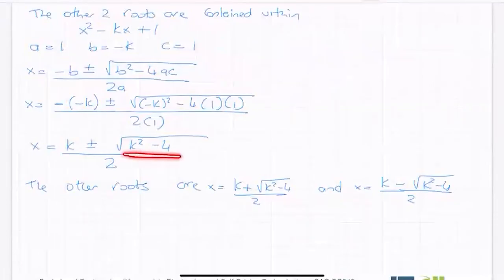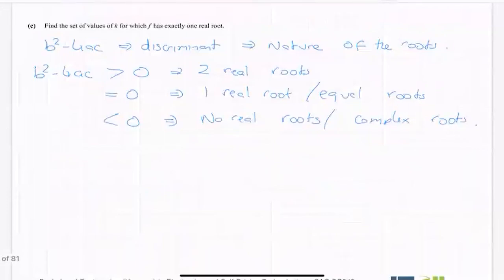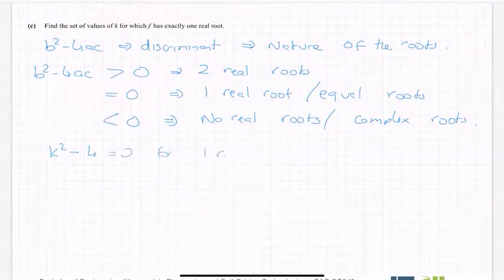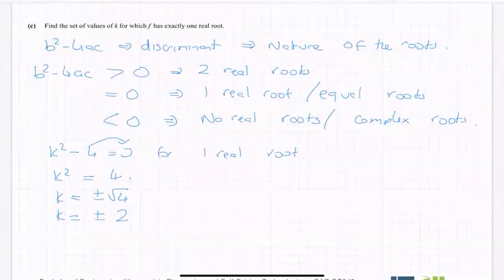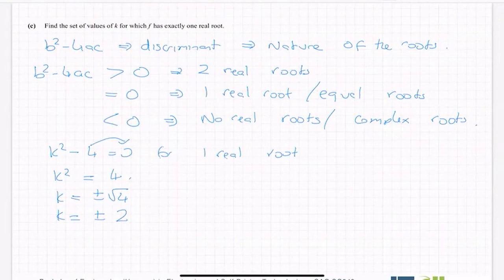So what was our b squared minus 4ac? Well, it was here, look at it under the square root soon. So k squared minus four. So k squared minus four. Well, we have to find the values of k for which this has one real root. So it's going to be equal to zero for one real root. K squared equals four. And then k is equal to plus or minus the square root of four. It's plus or minus two. And so they are the values of k for which f has exactly one root.